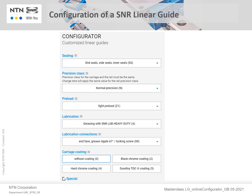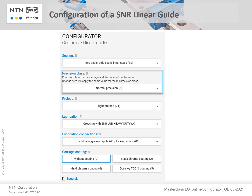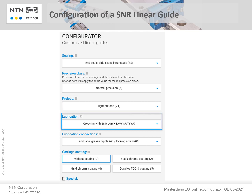All other carriage options can now be selected. All items initially shown are the preset selections. They are as follows: SS seals for standard seals; the precision class, which was automatically matched to the selected precision class of the rail; and light preload designated by Z1; greasing of the carriages with the standard SNR lube heavy duty.